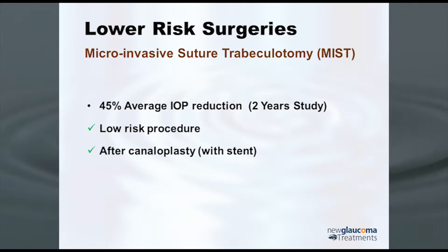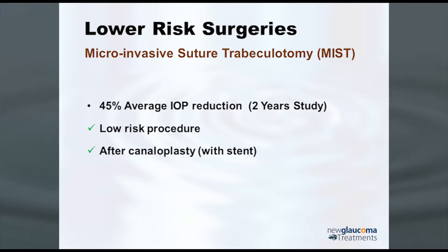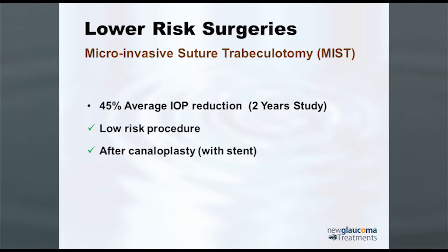Pulling the suture through rips open the trabecular meshwork. That's called microinvasive suture trabeculotomy. In a two-year study, it showed a 45% reduction in intraocular pressure. It's a low risk procedure. The main risk you have is hyphema — some bleeding in the front of the eye as you open up the trabecular meshwork — and that generally goes away on its own.